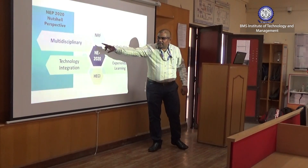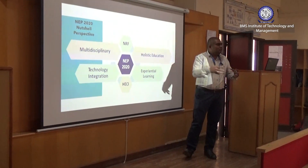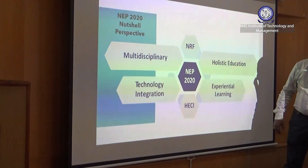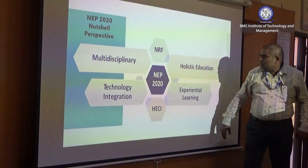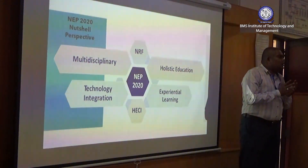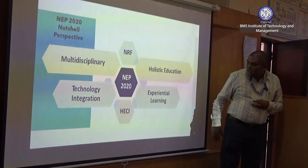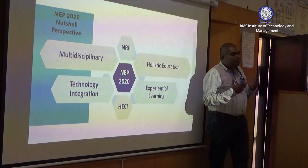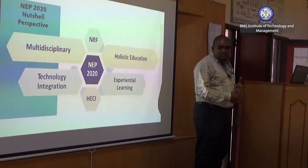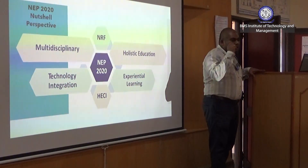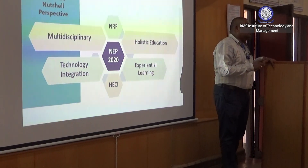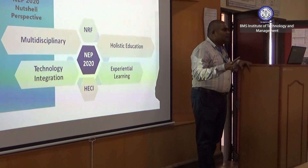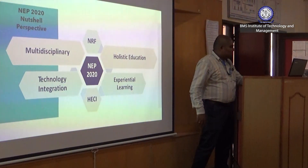The key features include multidisciplinary education, technology integration, NRF — National Ranking Framework — NEP 2020, and Higher Education Commission of India, HECI. Holistic education means 360 degrees — developing in all angles. That is called holistic education. Experiential learning means giving more importance to practicals and practical exposure, especially in vocational training. More hands-on sessions must be included — even in open courses, every afternoon session should be hands-on, not just theory.